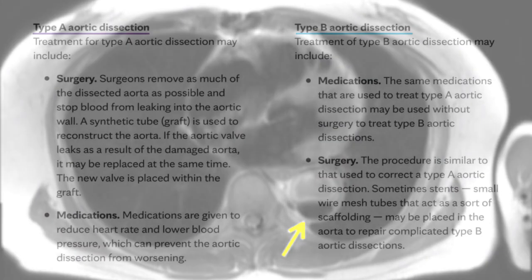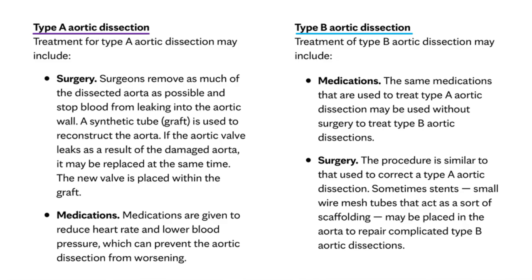The treatment is quite different between the two types. Type A typically requires surgery, while Type B, they tend to try medicines first — mainly to lower blood pressure — if possible, before resorting to surgery. If they're successful with medicines or can delay surgery, they'll go in that direction.